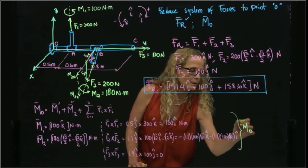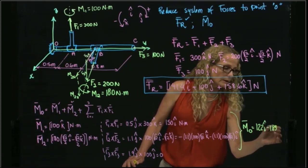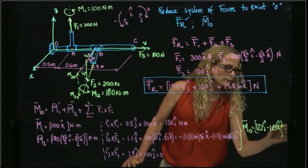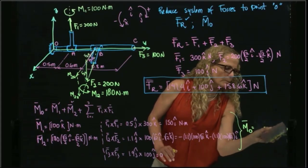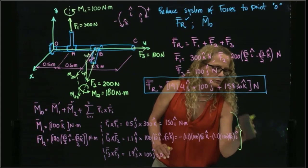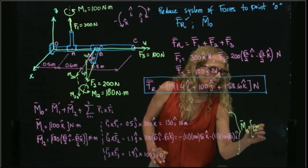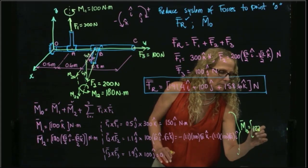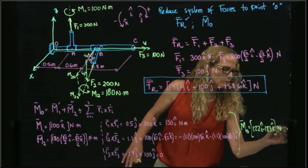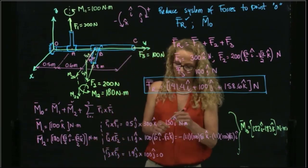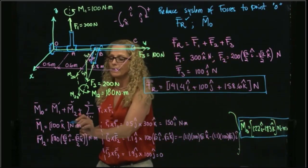The moment with respect to O will be equal to 122 in i minus 183 in k, and the unit is newton meters. I didn't have that much space, but it's very important always to include the units: 122 in i minus 183 in k, newton meters. So this is the solution for the moment when I add all the components together.